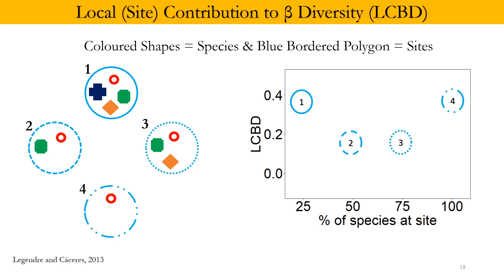Sites with very few biodiversity elements need restoration efforts, while those with maximum biodiversity need protection. Hence Site 1 and Site 4 in this example need conservation prioritization, but with very different management strategies: Site 4 requires protection and Site 1 requires restoration. This is a very good example of how beta diversity is a powerful tool for conservation management and prioritization.